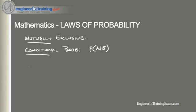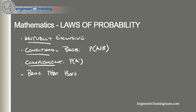The complement of an event is the event not occurring. The probability of event A not occurring is denoted P(A'). The probability that events A and B both occur is the probability of the intersection of A and B, written as P(A∩B) — I always call that symbol the upside-down U.